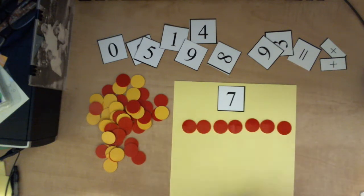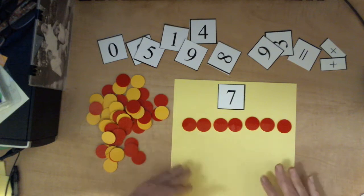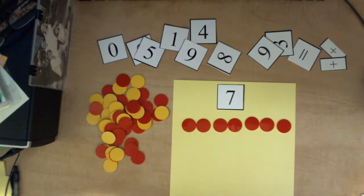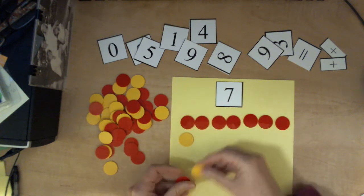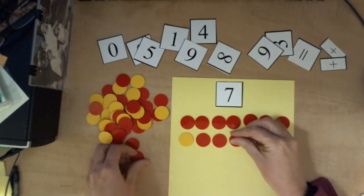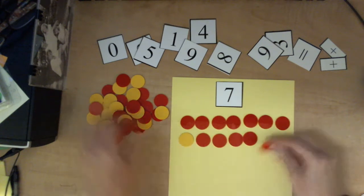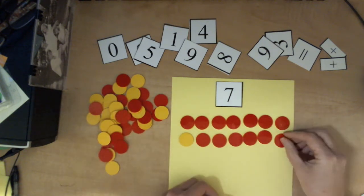And then if you're working with the student or the student's working independently or maybe students are working in partners or small groups, somebody could say, how can you make another seven? And so a student might say, well I know that I can take one and then two, three, four, five, six, seven.